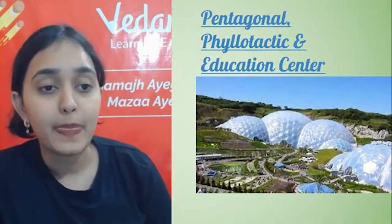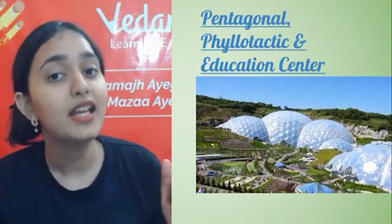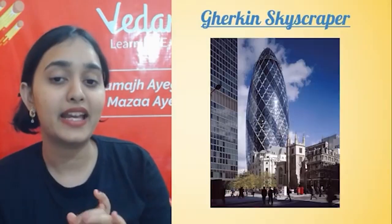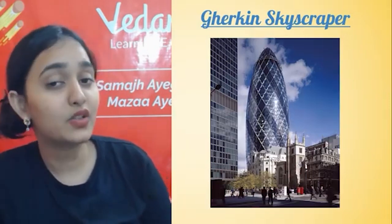Similarly, we have the Pentagonal Phyllotactic Education Center. This structure is composed of geodesic domes made up of hexagonal and pentagonal cells. This is because hexagon packing mixed with pentagons is the best closed packing — where you can achieve maximum closed packing and maximum surface area in minimum space. That is how these education centers were built.